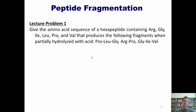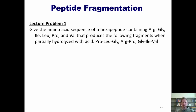Let's take a look at my first lecture problem for the day. I want you to give me the amino acid sequence of a hexapeptide — that is, a peptide containing six amino acids — that contains arginine, glycine, isoleucine, leucine, proline, and valine, and produces the following fragments when hydrolyzed with acid: proline-leucine-glycine, arginine-proline, and glycine-isoleucine-valine. Can you figure out what the original order of the entire six-membered peptide was? Pause now if you want, because I'm going to give you the answer momentarily.